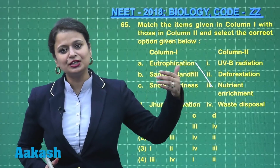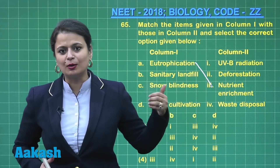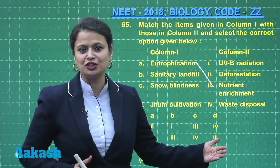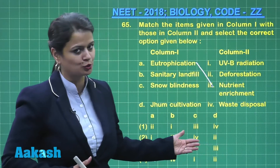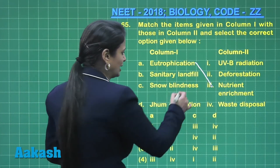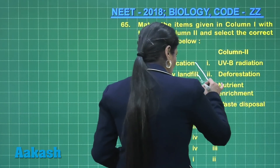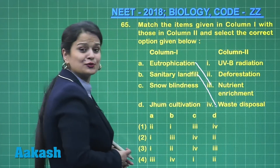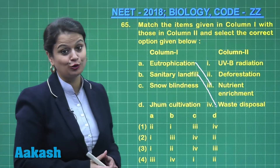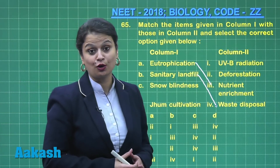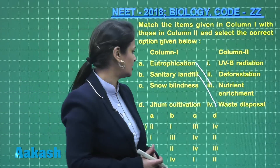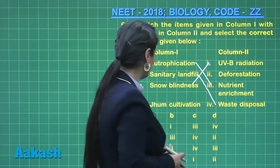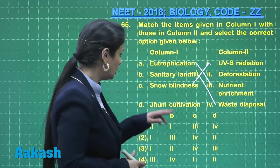Decomposition and composting occur in the pit, which changes the waste into manure. So sanitary landfills go with waste disposal. Snow blindness occurs due to absorption of UVB rays by the cornea, so snow blindness goes with UVB radiation.